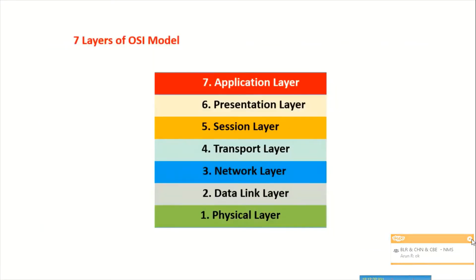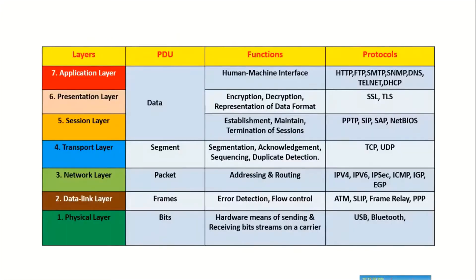The transport layer is the first of the four network-based layers. In this layer, data is divided into a number of segments and then transmitted. The main functions are segmentation of data, sequencing, and then sending it. The protocols used here are TCP and UDP.